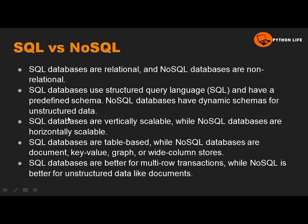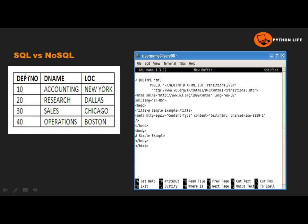SQL databases are vertically scalable. See here — this table is a SQL database, meaning a relational database. Data is in the form of a table with a proper structure. This is vertically scalable. For example, if we have department number data, we can analyze it in that structured format.